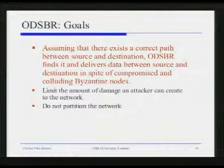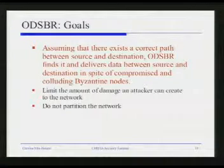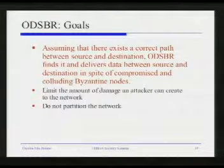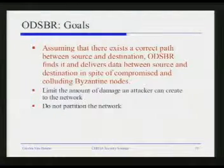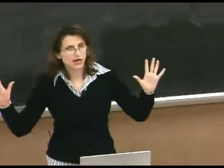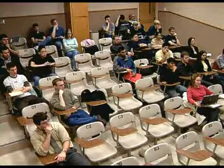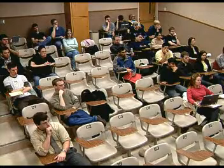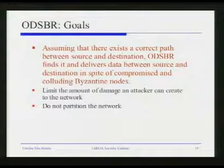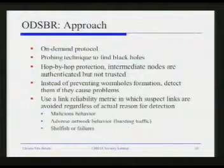Let me tell you about this protocol. The goal is: assuming I have a source and a destination, I make no assumption about how many nodes in between are compromised, but I assume there is a correct path between them. If no adversary-free path exists, there is nothing I can do. But if such a path exists, the goal is to detect it and use it to deliver data.